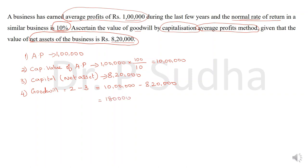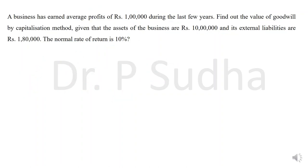Remember this step by step — it will be very easy. First calculate average profit, then find out the capitalized value of average profit, then calculate net asset, and finally calculate goodwill. Now for one more question: a business has earned average profit of rupees 1 lakh during the past 5 years. Find out the value of goodwill by capitalization method.